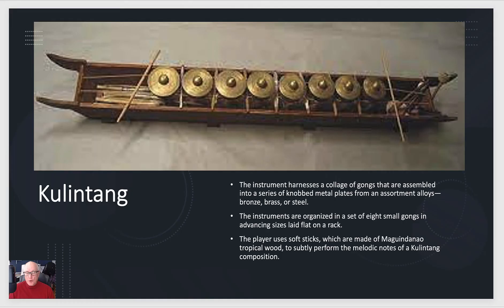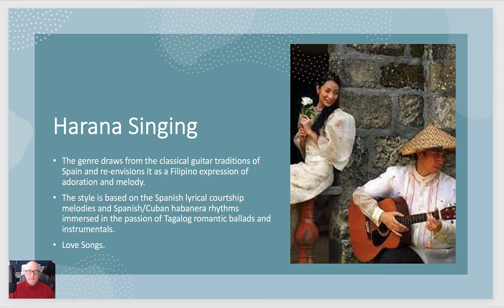Two really important instruments for the Philippines: one is the kulintang, an instrument that uses a collage of gongs assembled into a series of knobbed metal plates — very similar to what we saw in Indonesia. The instruments are organized in a set of eight small gongs. The player uses soft sticks made of magwa danau tropical wood to perform the melodic notes of a kulintang composition. It's almost boat-shaped, like a canoe, making it easy to carry and manufacture.